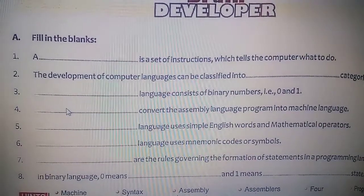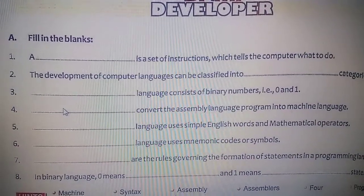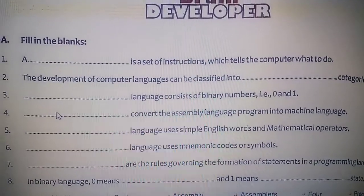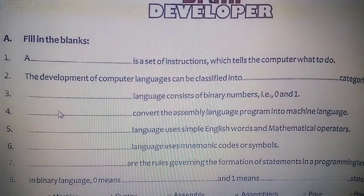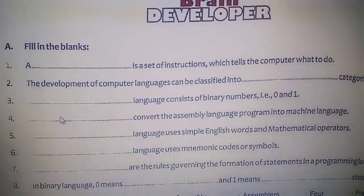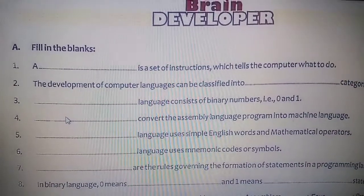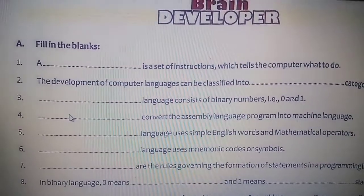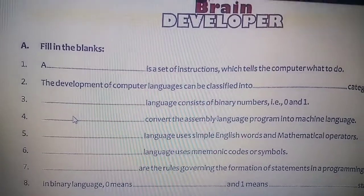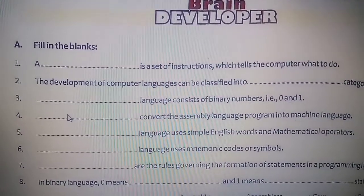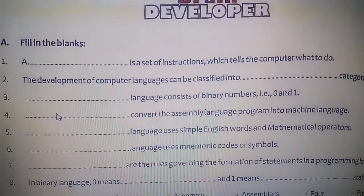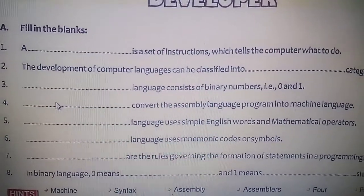Fifth: the dash language uses simple English words and mathematical operators. Which language uses English words? That was the third type of language — high level language. The answer is high level language uses simple English words and mathematical operators.